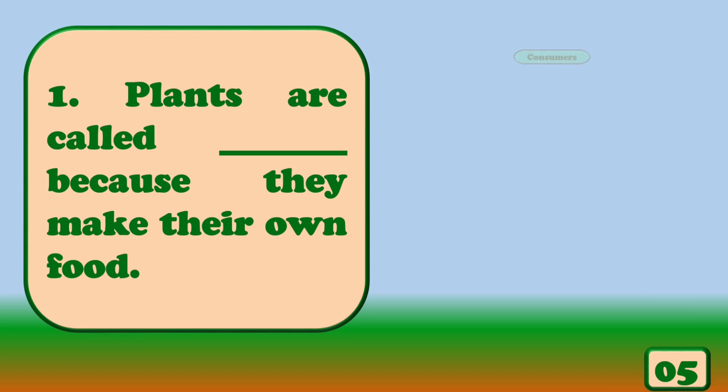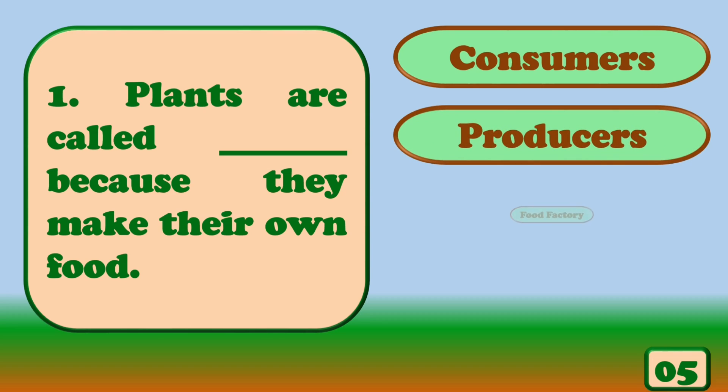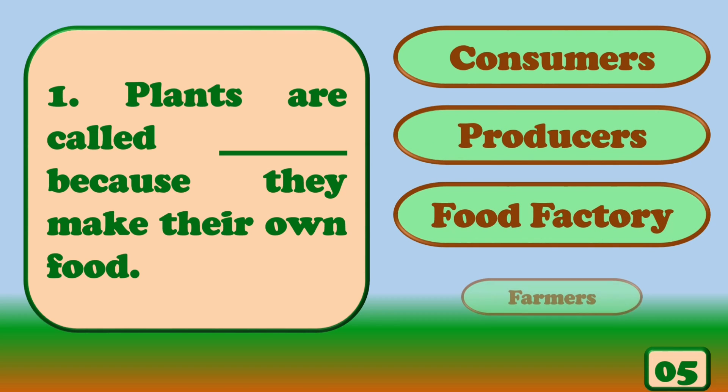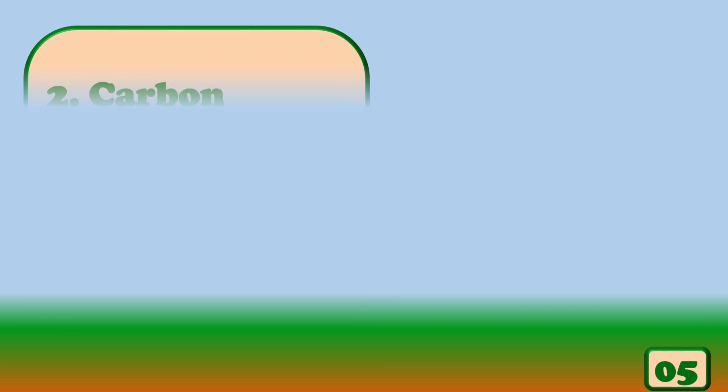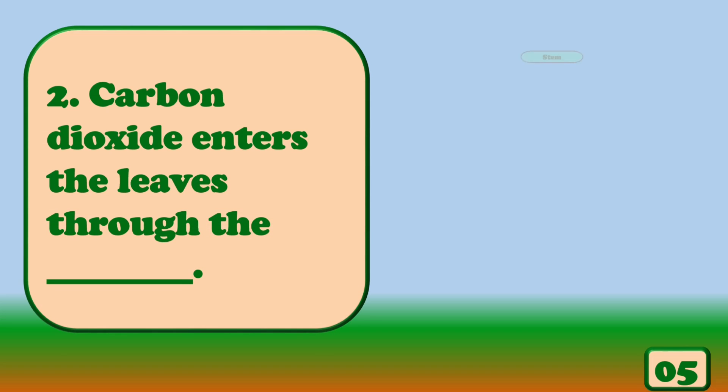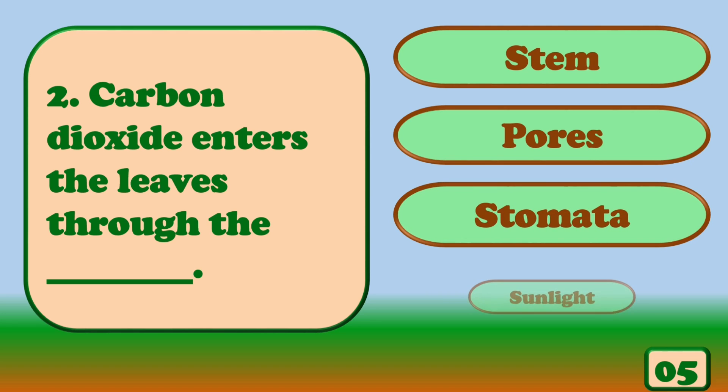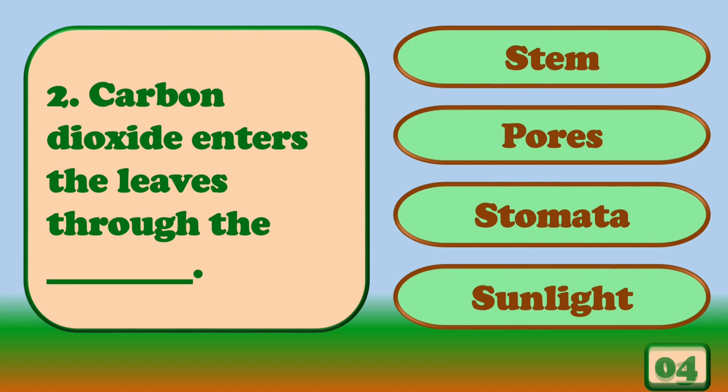Plants are called producers because they make their own food. Carbon dioxide enters the leaves through the stomata.